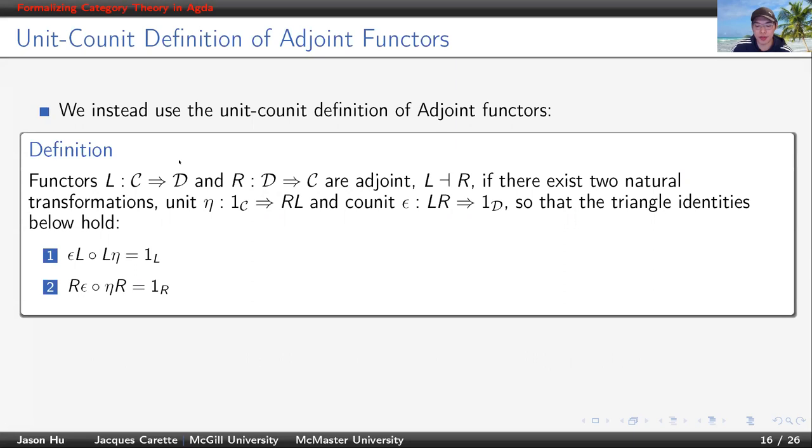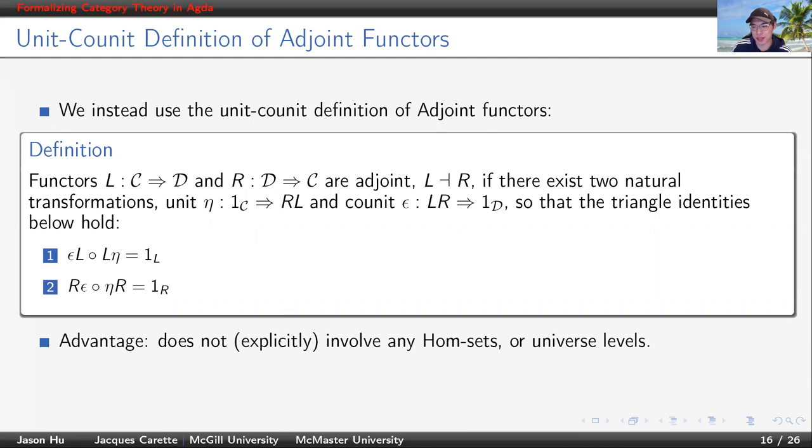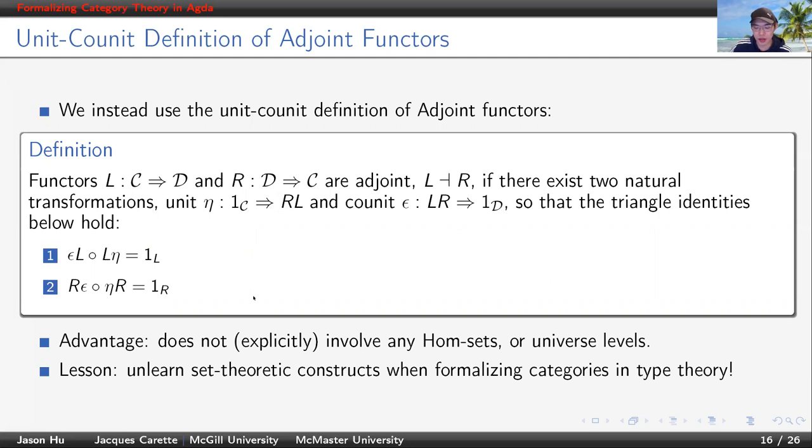So instead of this hom-set definition, we use this unit-counit definition of adjoint functors. The definition goes like this: It requires two natural transformations, unit eta and counit epsilon, such that the triangle identity holds. And these two identities, they live in the category of functors, so the actual formulation involves no universe level or hom-set. So overall, the advantage of this definition is it doesn't explicitly involve any hom-sets or universe levels. One lesson we learned here is to unlearn set theory when doing things in type theory.